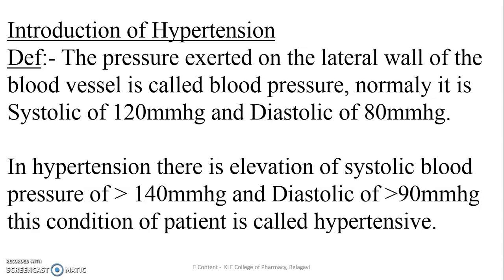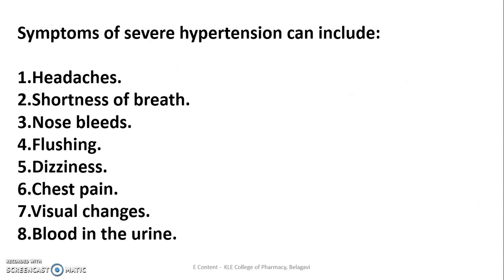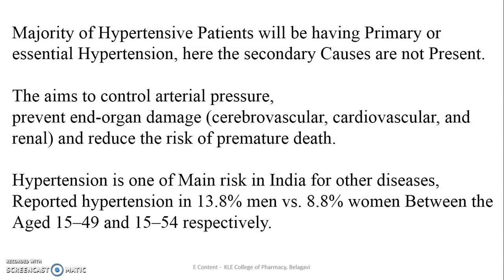In hypertension, if there is any elevation in systolic pressure of more than 140 mmHg and diastolic of 90 mmHg, the patient is said to be hypertensive. Symptoms of hypertension include headaches, shortness of breathing, nosebleeding, flushing, dizziness, chest pain, visual changes, and blood in urine.